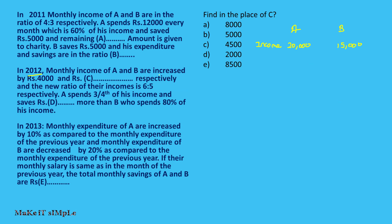In 2012, the monthly incomes of A and B are increased by 4,000 and some dash amount respectively, and the new ratio of their incomes is 6 to 5. A's income goes from 20,000 to 24,000. B's new income becomes 20,000. So B's increase is 5,000. The answer is C: 5,000.